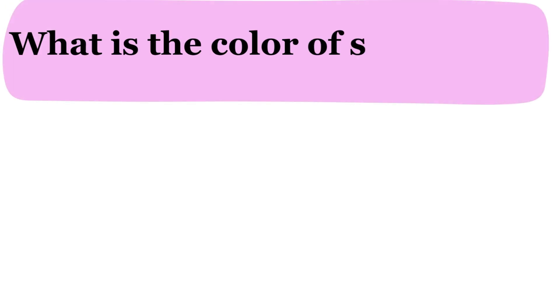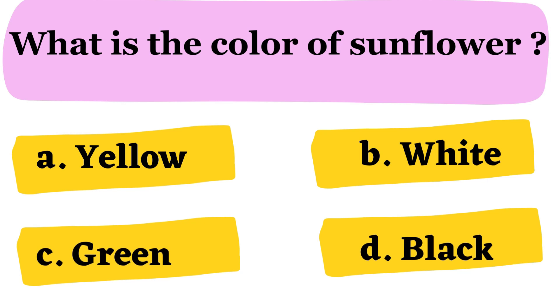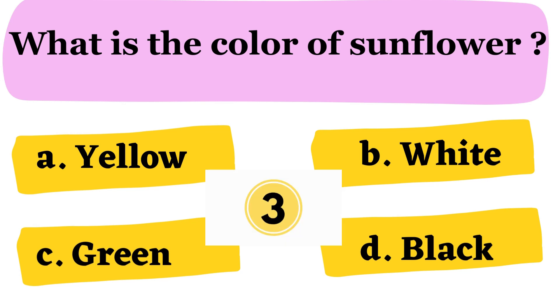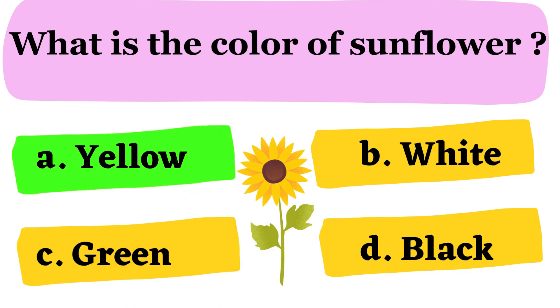What is the color of sunflower? A. Yellow B. White C. Green D. Black. The correct answer is option A.